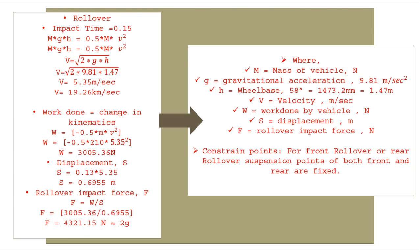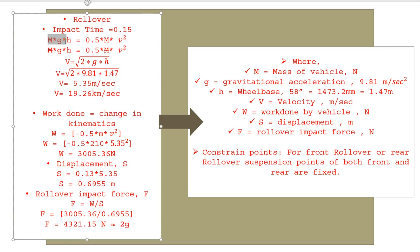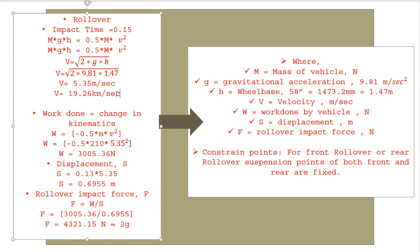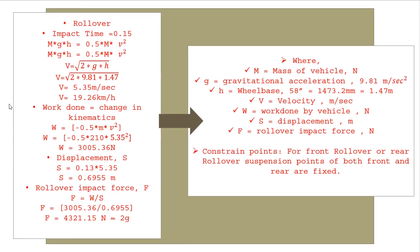After this, we'll look at rollover. In rollover condition we have considered impact time of 0.15 seconds. Here we have done kinetic energy equals potential energy. With this formula, we equated both terms. As mass was common, we cut the mass. After that we have value of g and h, so we calculated the velocity in meter per second first, then converted it into kilometer per hour.